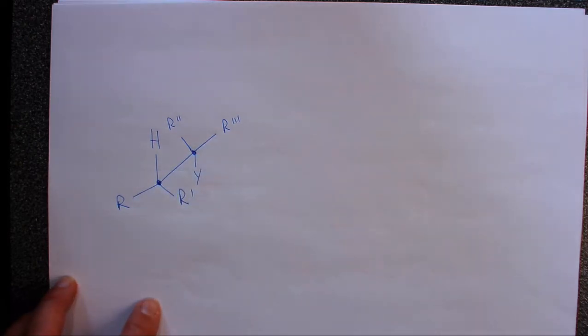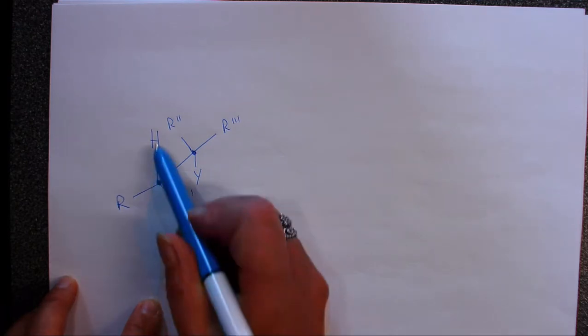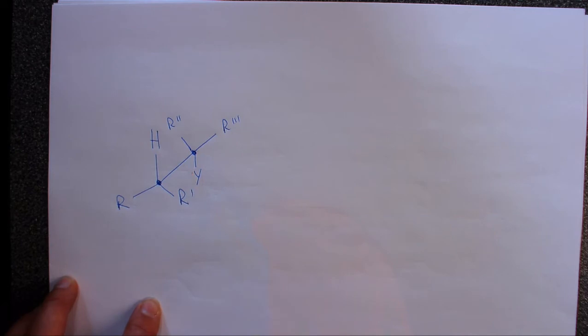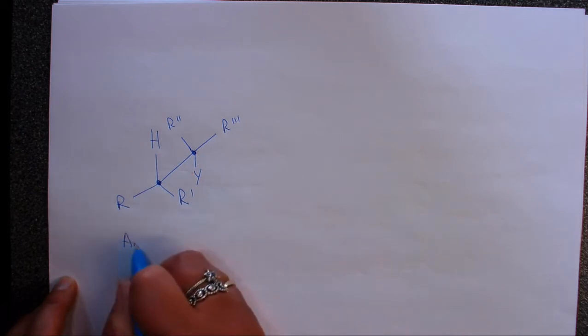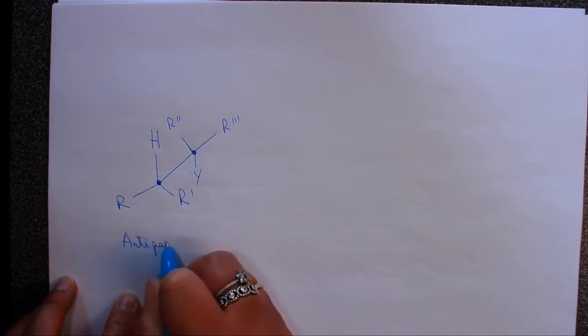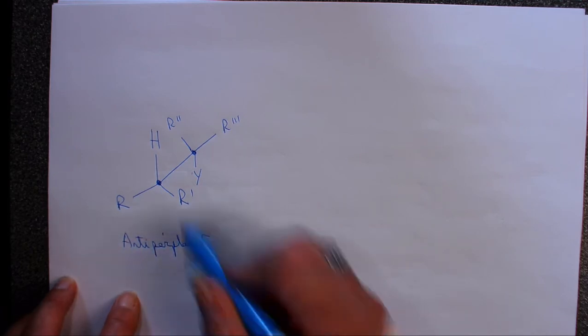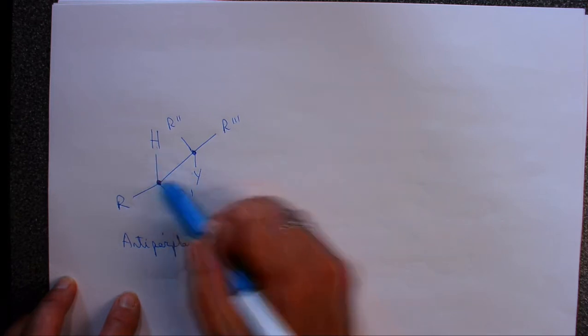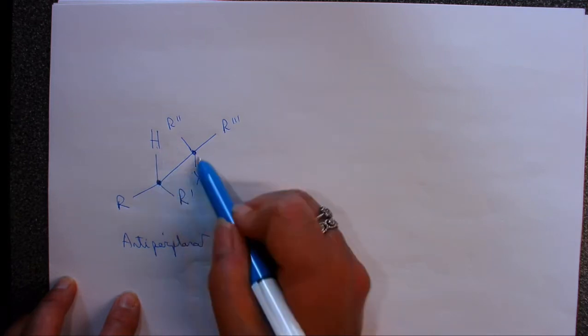What we're saying is when we do the elimination, you could have these opposite each other in that way, so these are what we call anti-periplanar. They're planar because they're in the same plane and they're anti because this bond here is opposite to this one, that one's up, that one's down.